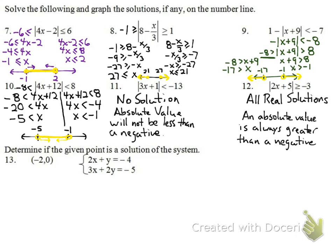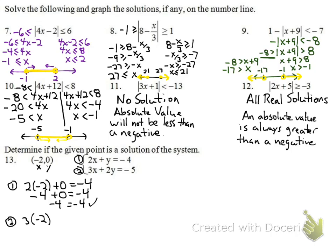Number 13: determine if the point (-2, 0) is in the solution set of the system. Plugging into equation 1: 2(-2) + 0 = -4, so -4 = -4 ✓. Plugging into equation 2: 3(-2) + 2(0) = -6, but -6 ≠ -5. Since it fails the second equation, this point is not a solution of the system.